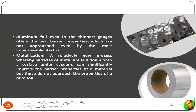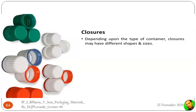Aluminium foil is very popular in blister packaging and alu-alu packaging (double foil aluminium system) in which tablets are packed. Even in the thinnest gauges, aluminium foil offers the best barrier properties, not allowing permeability of gases. Metal packaging provides the best barrier system — properties not approached even by the most impermeable plastics. Metallization is a relatively new process whereby particles of metal are laid down onto a surface under vacuum; this can significantly improve the barrier properties of a material, but does not approach the properties of a pure foil.